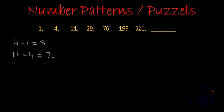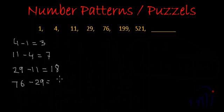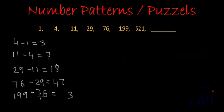This equals seven. Then we have the fourth term, 29 minus 11, which gives us 18. Then we have 76 minus 29, which gives us 47. Then we have 199 minus 76, which gives us 123.